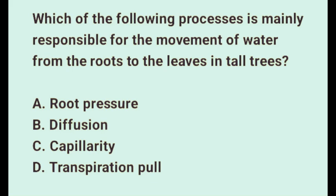In tall trees (over 30 meters), water moves upward against gravity. Root pressure is created by active absorption of minerals and water in roots, but it is weak and can only push water a few meters. Diffusion explains gas exchange, not long-distance water transport. Capillarity is the ability of water to rise in narrow tubes, but is insufficient for the height of tall trees.